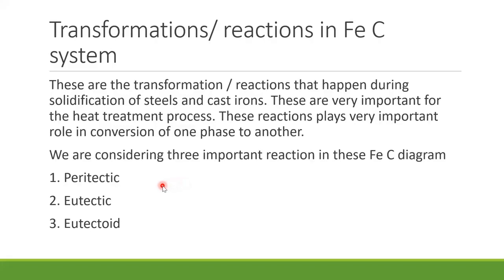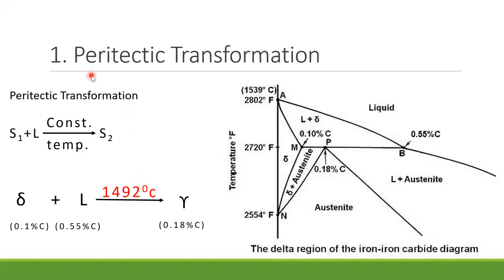In previous videos I explained what peritectic, eutectic, and eutectoid mean, but now we will study these reactions specifically for the iron-carbon system. Let us begin with the first transformation — peritectic transformation. 'Peri' means around, so in this transformation a solid is surrounded by a liquid. When the temperature is reduced, the solid and liquid combine together and form another solid. So from one solid and one liquid, another solid is formed.